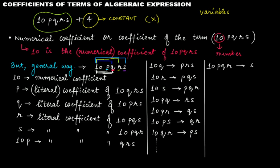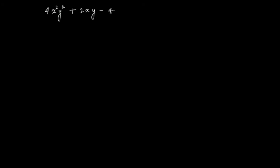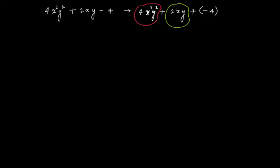Let's take one last example — a simpler one. Let's say you have 4x² y² plus 2xy minus 4. We can write this with brackets as: 4x²y² plus 2xy plus (−4), since terms always add up to form an algebraic expression. So this is term 1, this is term 2, and this is term 3.